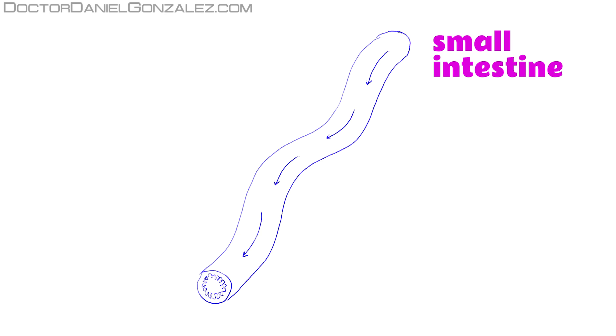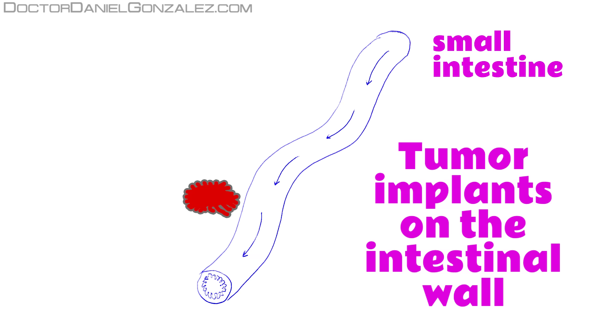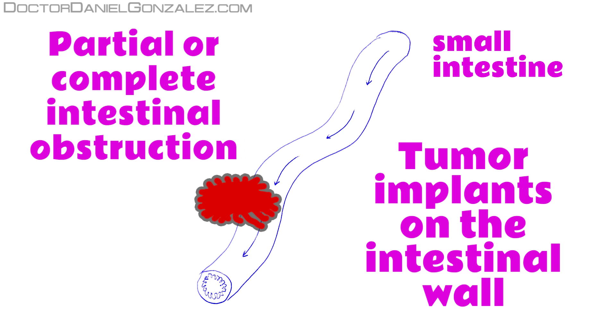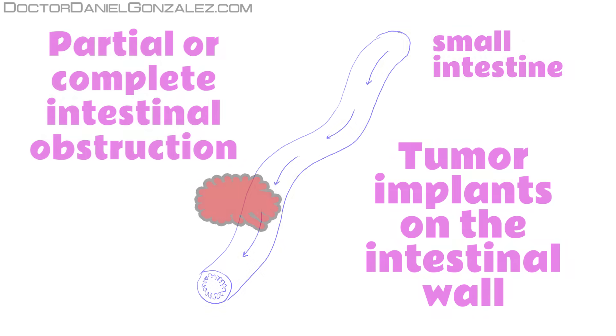If tumor implants are placed in the outside wall of the small intestine, they can cause cessation of transit of intestinal contents because of the compression of the tube from the outside. They produce a partial bowel obstruction or a complete intestinal obstruction.